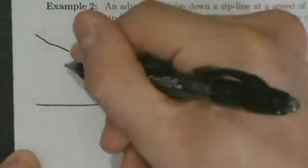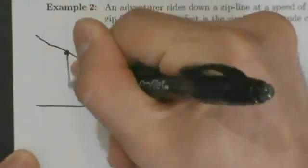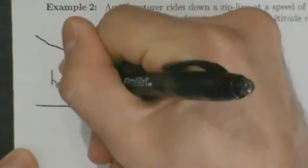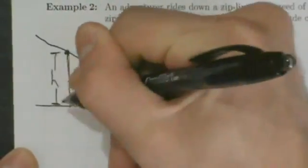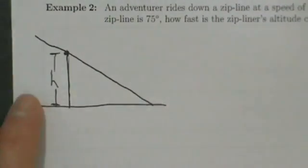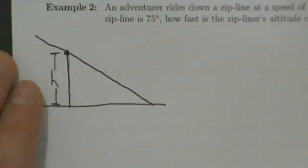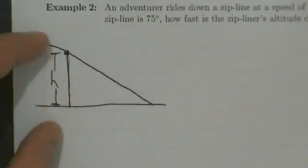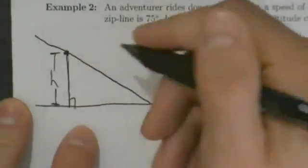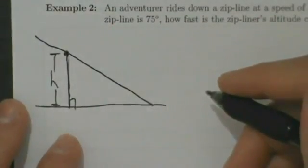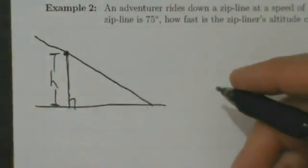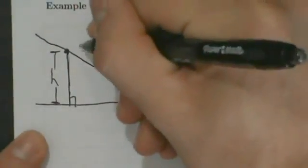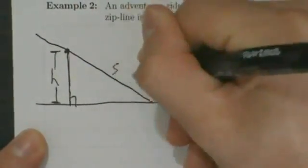The adventurer is riding down the zipline somewhere up here. This distance here will be h, the height — so this will be the height of the zipliner. It's a variable because as the zipliner rides down on the zipline, h is going to get smaller. This is a right angle here because we measure the height directly, vertically, at a right angle from the ground. And this distance here we'll call s.